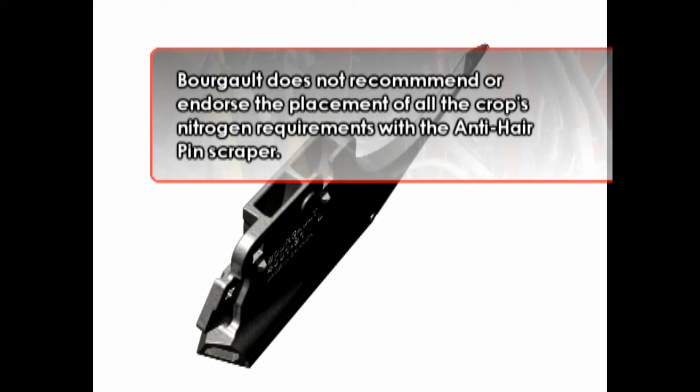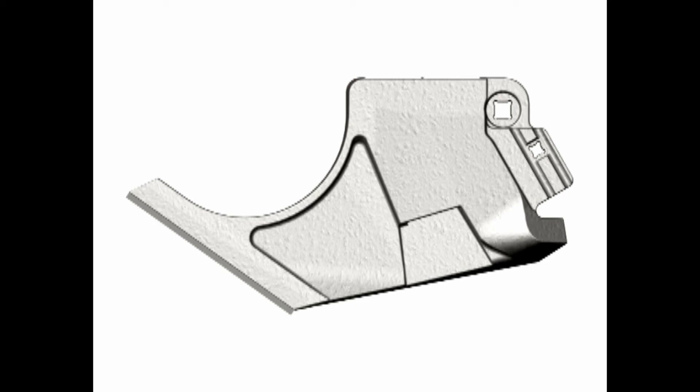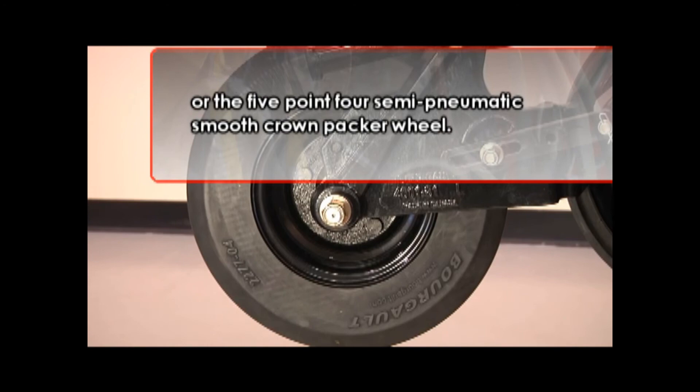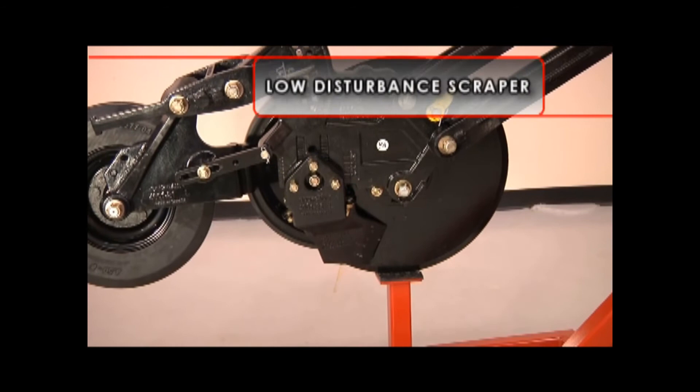Bourgault does not recommend or endorse the placement of all the crop's nitrogen requirements with this scraper system, as it will endanger your crop to the toxic and desiccating effects of the fertilizer. The best packer wheel choice for the anti-hairpin scraper is typically the double shoulder style semi-pneumatic packer or the 5.4-inch semi-pneumatic smooth crown packer wheel.